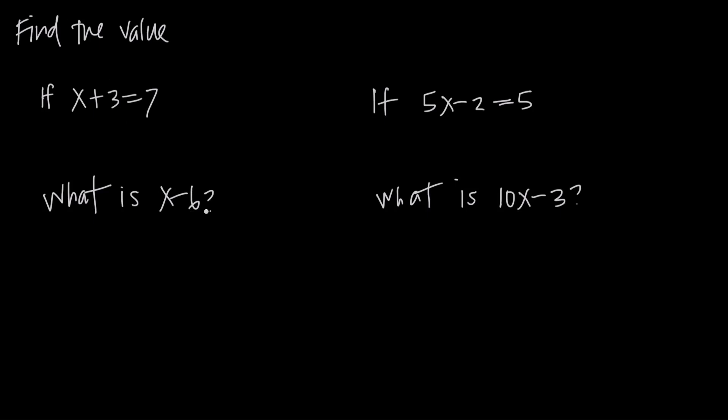So really, we have a system of linear equations - two equations that we're given. We're told that we have this condition here: if x plus 3 equals 7, then find this value.